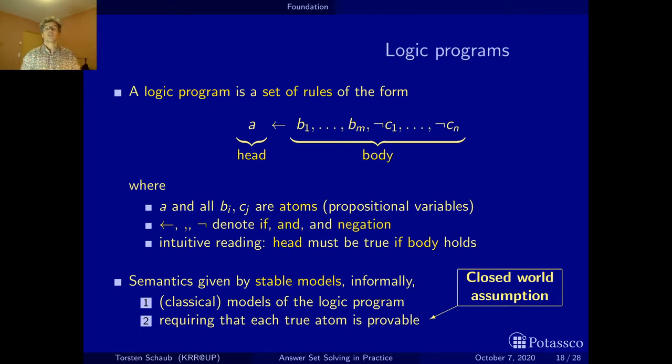The second condition then implements the closed world assumption. It selects among all the models those that are then considered as stable models. And what this condition requires is that each atom that has been assigned true is also provable. And provable means each atom that is true must have been derived by a rule that has this atom in the head. And then recursively, all the positive preconditions or body literals must have been derived in the same fashion until one ends up with a rule that has an empty body.